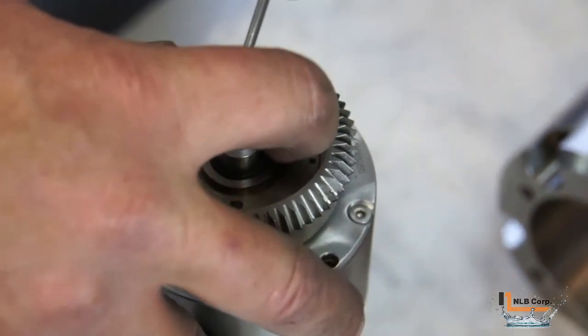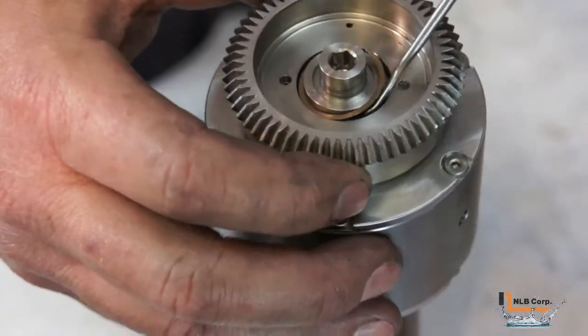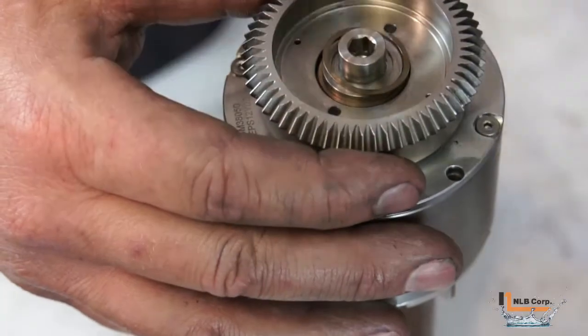Remove this O-ring. Locate the end of the retainer ring, use a pick to get under the end of the ring, and then walk it out of its groove.